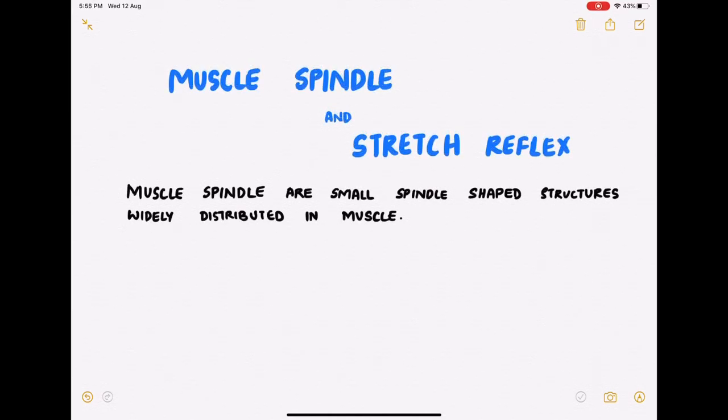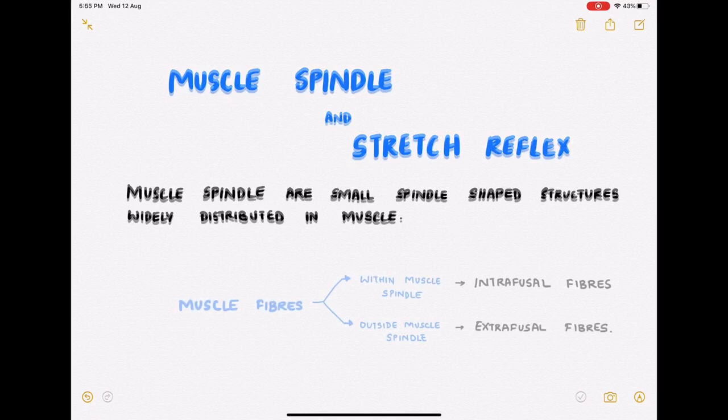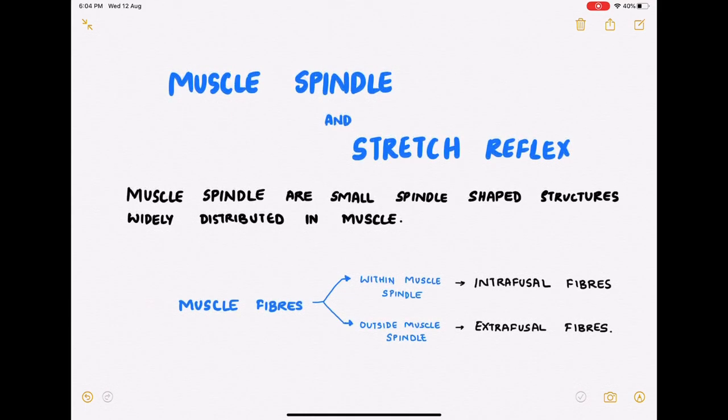Muscle spindles are small spindle-shaped structures widely distributed in muscle. Each muscle spindle contains many muscle fibers known as the intrafusal fibers, while the extrafusal fibers are seen outside the muscle spindles and they constitute the major muscle mass.